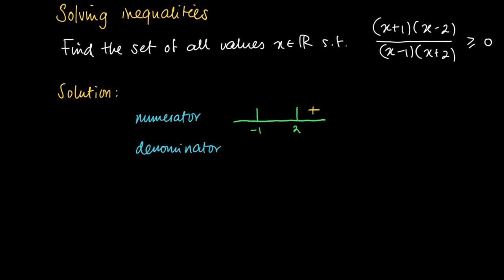Jumping into the interval (-1, 2): x+1 is still positive since we are to the right of -1, but x-2 now turns into a negative term. So we get a positive times a negative, which results in a negative numerator — we write a minus. Something similar happens if we jump over the root -1: then x+1 becomes negative, so we get a negative times a negative, which equals a positive. We write a plus on the left-hand side of -1.